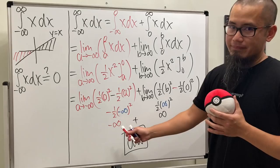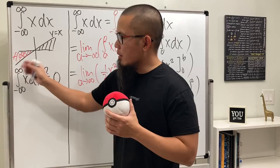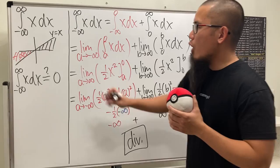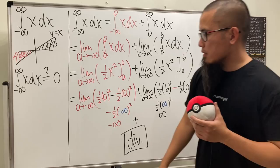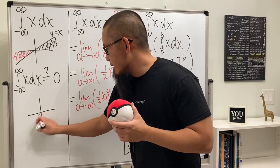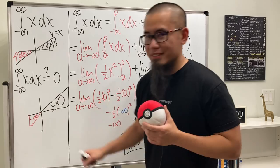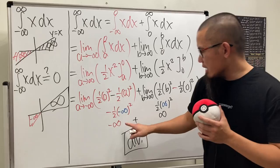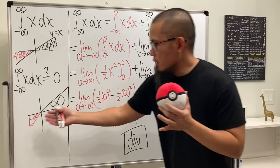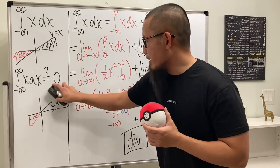Once the first piece diverges, we're done — the whole integral diverges. The idea is that with negative infinity and positive infinity as separate limits, you really don't know how far to the left or how far to the right you're talking about. The negative infinity could be a little piece, while the positive infinity could be a much bigger infinity — you just don't know if they're the same size.